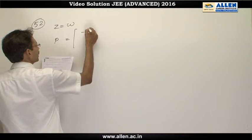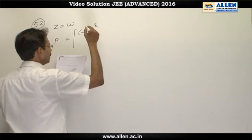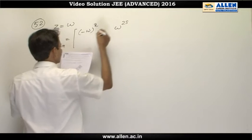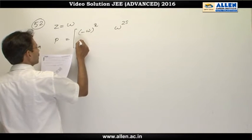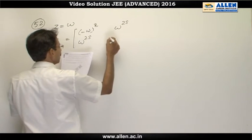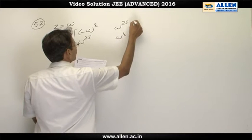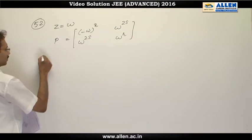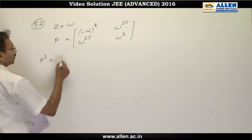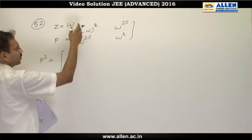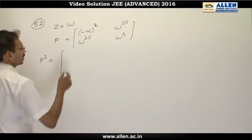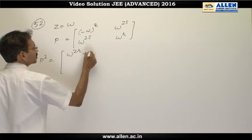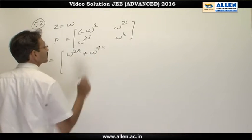This is minus omega raised to the power r, then omega raised to the power 2s, omega raised to the power 2s, and omega raised to the power r. Now I will square it. The first row multiplied by the first column gives us omega raised to the power 2r plus omega raised to the power 4s.